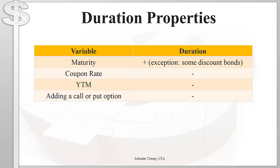Now let's look at duration properties and see how different variables affect duration. In this discussion we will only change one variable at a time while holding the others constant. For example, if we add a call on a bond, we will assume that maturity, coupon rate, and yield remain the same.